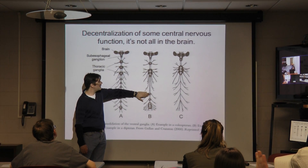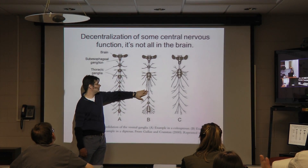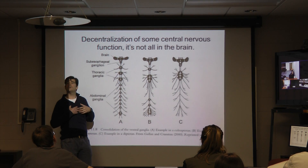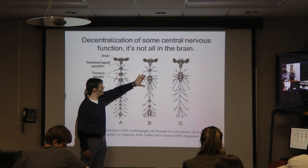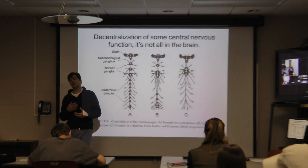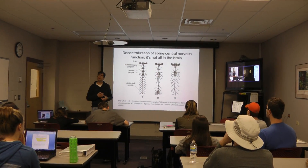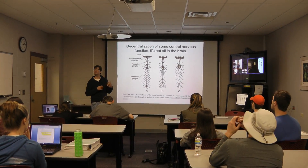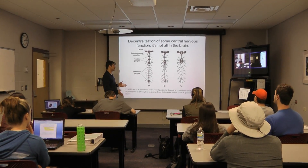And here, some of the ganglia that were in the upper abdomen and two of the thoracic ganglia have indeed become fused into one larger ganglionic region. And you'll see this fusion of ganglia in different body regions across taxa.